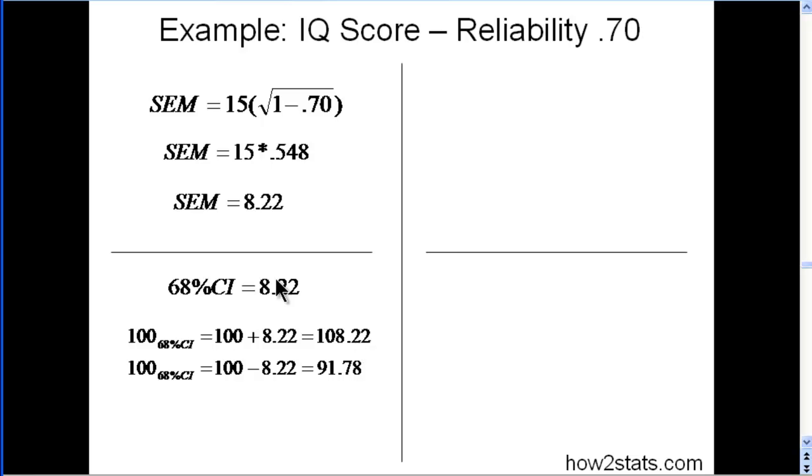I'm simply adding the standard error of measurement to the score of 100 and subtracting it as well to get the lower bound. So these are the 68% confidence interval estimates based on the standard error of measurement.